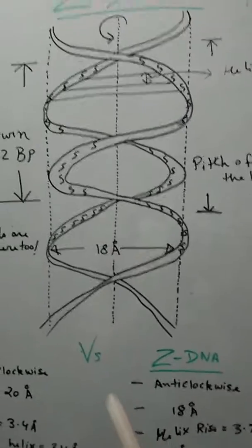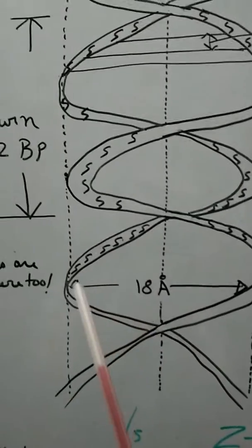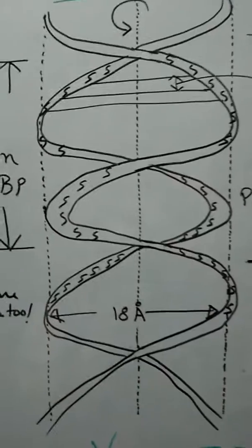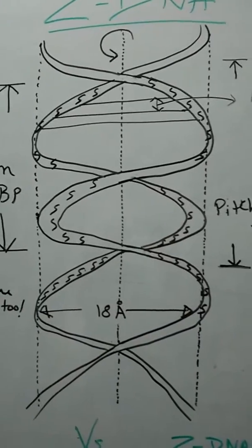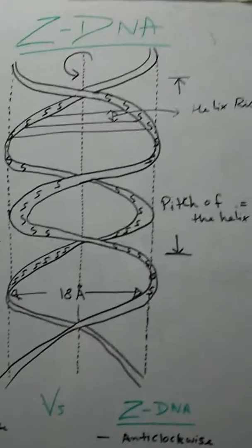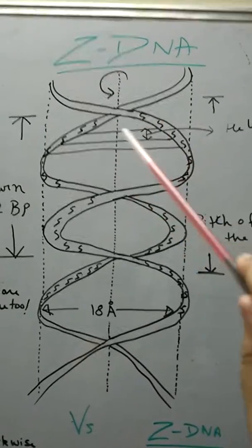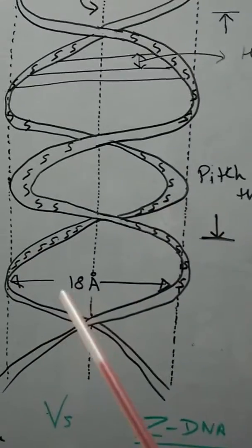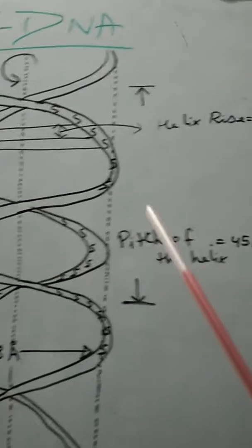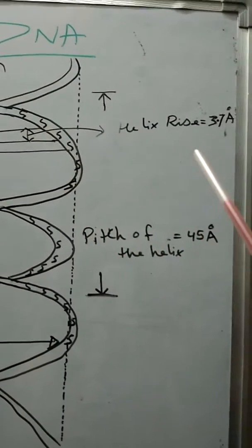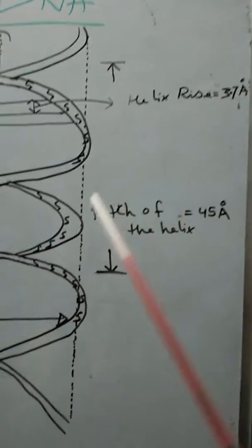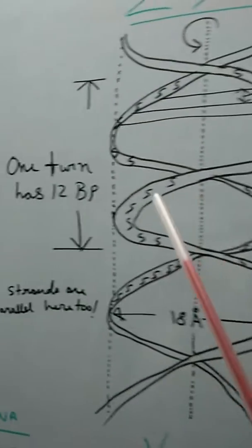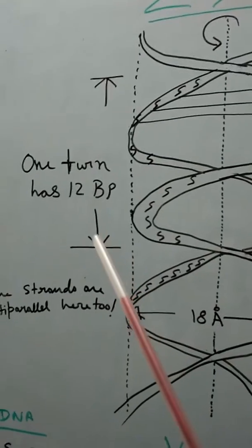So only one more thing: the diameter is 18 angstroms in Z-DNA. It was 20 angstroms in B-DNA. So once again, rotation is anti-clockwise or left-hand turn rotation, diameter 18 angstroms, helix rise 3.7 angstroms, pitch of the helix 45 angstroms, one turn will have 12 base pairs.